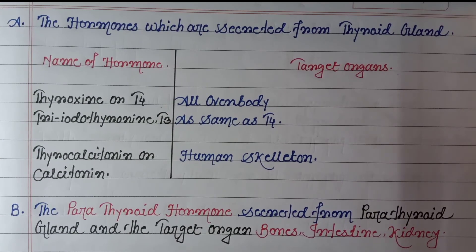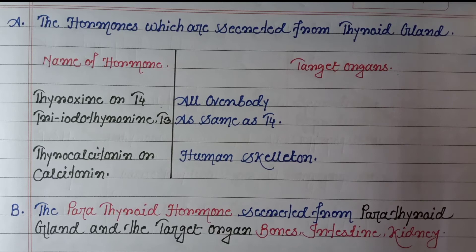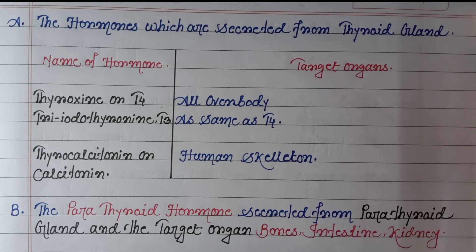Now the hormones secreted from the thyroid gland. From the thyroid gland, basically three types of hormones are secreted. First is thyroxine hormone, or T4 hormone, and the target organ is all over the body. Next is triiodothyronine, or T3 hormone, which acts the same as thyroxine. And the last one is thyrocalcitonin, or calcitonin.